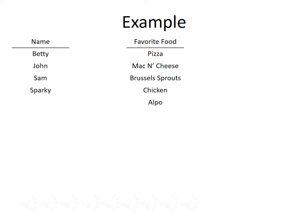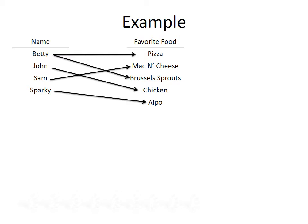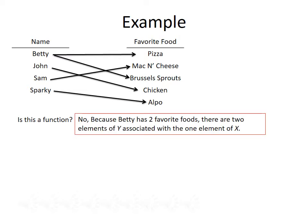Let's look at another example. This time, our two sets are lists of names and potential favorite foods. For the names, we have Betty, John, Sam, and Sparky. For the potential favorite foods, we have pizza, mac and cheese, Brussels sprouts, chicken, and Alpo. Betty really likes pizza, but she also really likes Brussels sprouts. John's favorite food is chicken. Sam's favorite food is macaroni and cheese. And Sparky, who is a dog, his favorite food is Alpo. Given these relations between the people and their favorite foods, would this be a function? And the answer is no, because Betty has two favorite foods — that means there are two elements of y associated with the one element of x.